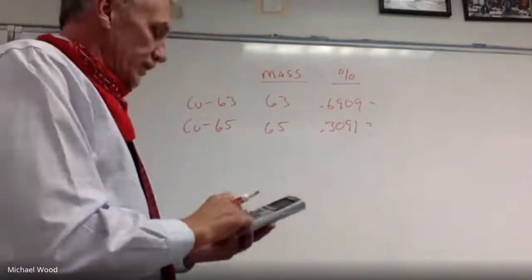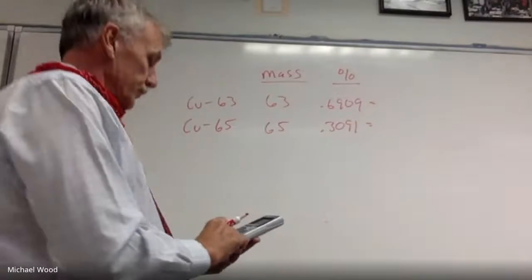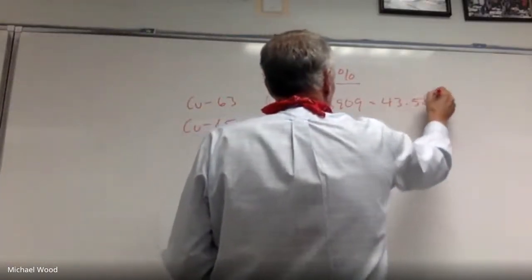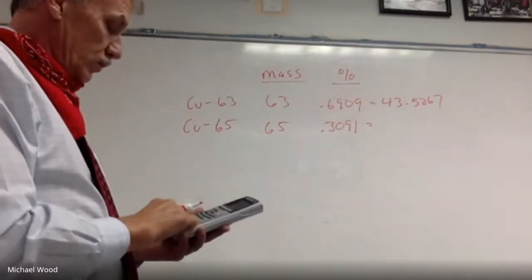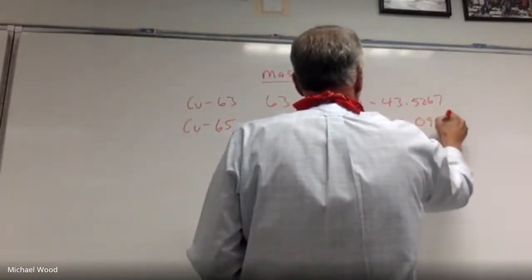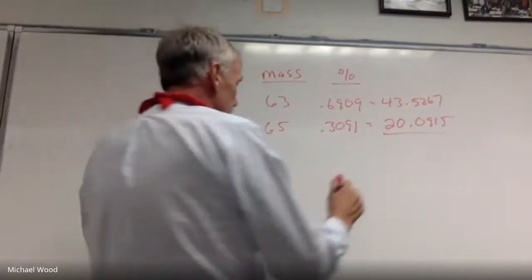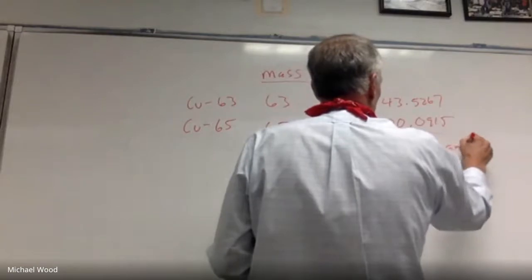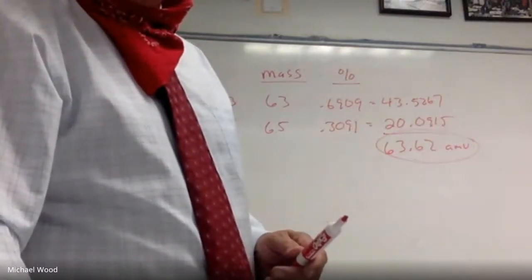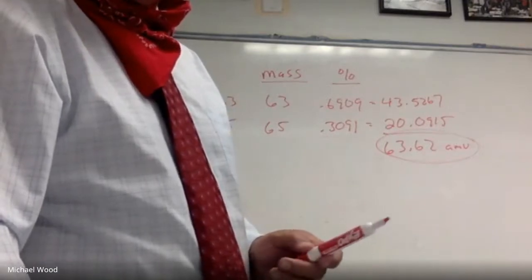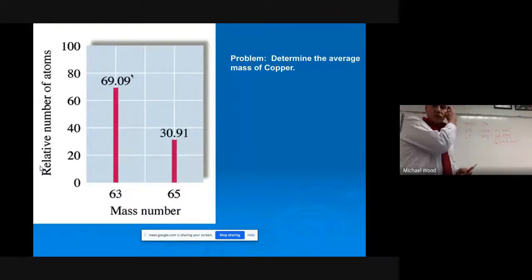And this is one place I don't worry about sig figs. What I usually do here is I just go out to the 100th. So 63 times 0.6909. Then I'll do 65 times 0.3091, which equals 20.0915. And now I'm going to add these up, and again, I'm going to round these to the 100th. So I get 63.62. And the real unit on this is an AMU. So what we did there is we found the atomic mass from that data from the element copper.